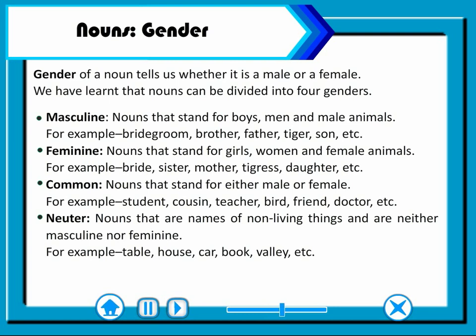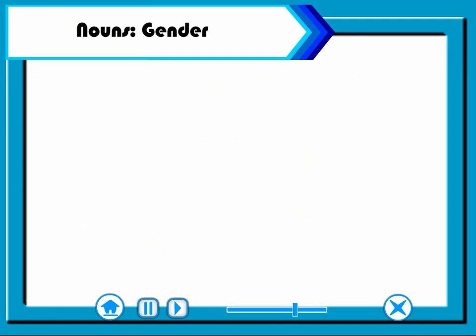Neuter. Nouns that are names of non-living things and are neither masculine nor feminine. For example, table, house, car, book, valley, etc.